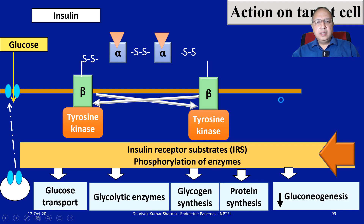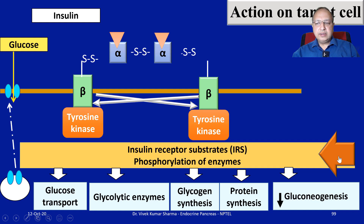The intermediate actions involve insulin binding to its receptors causing increased activity of cytoplasmic proteins called insulin receptor substrates, leading to phosphorylation of multiple enzymes. The impact includes enhanced glucose transport, increased glycolysis activity by stimulation of relevant enzymes, stimulation of glycogen synthesis, enhanced protein synthesis — since insulin is an anabolic hormone — and decreased gluconeogenesis, ultimately all leading to a decrease in blood glucose level.